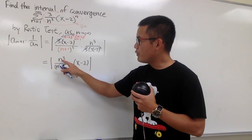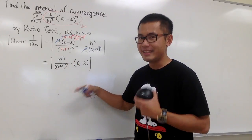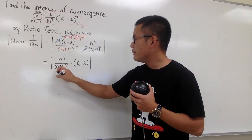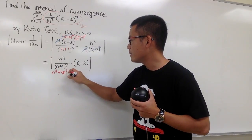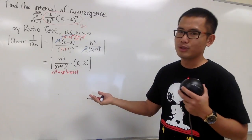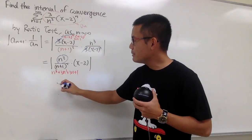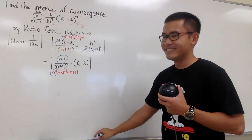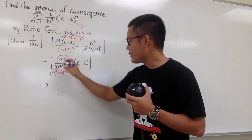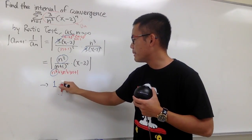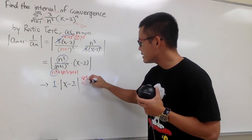Now, for the limit, because both terms are to the third power you can write this as (n over n+1) raised to the third power and then take the limit. Or, you can expand (n+1)^3 to get n^3 + 3n^2 + 3n + 1. Either way, when taking the limit, on the top you care about n^3 and on the bottom you also just care about n^3. So you take the limit and get 1. This first term approaches 1, and we multiply by the absolute value of x minus 2. As usual, you set this to be less than 1, and in our case we just get |x minus 2| < 1.